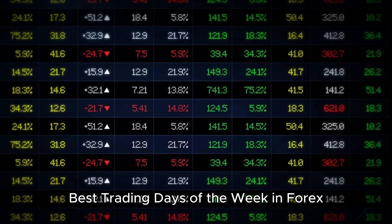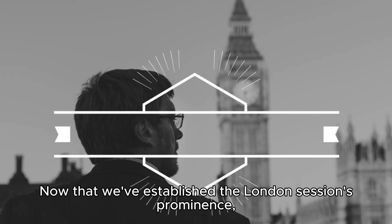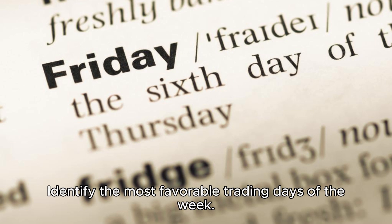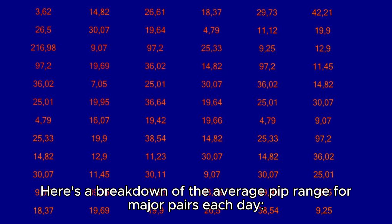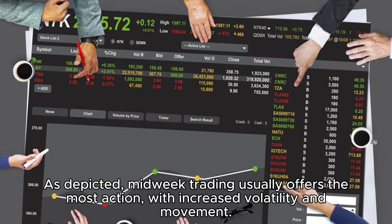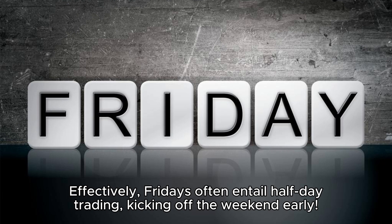Now that we've established the London session's prominence, it's worth noting that certain weekdays tend to exhibit more market activity across all sessions. Here's a breakdown of the average pip range for major pairs each day. Midweek trading usually offers the most action, with increased volatility and movement. Fridays typically maintain activity until 12 p.m. EST, after which market activity dwindles until closure at 5 p.m. EST — effectively, Fridays often entail half-day trading, kicking off the weekend early.